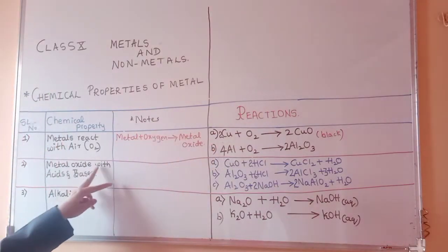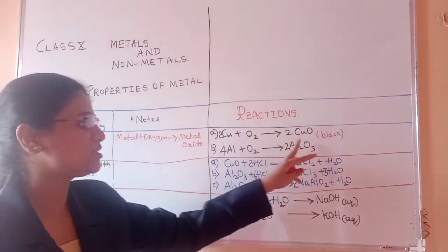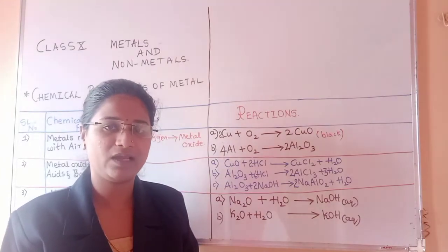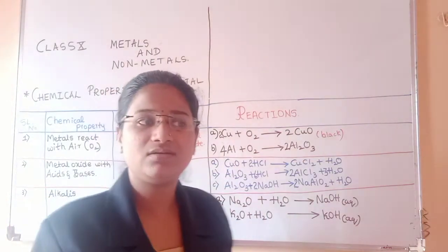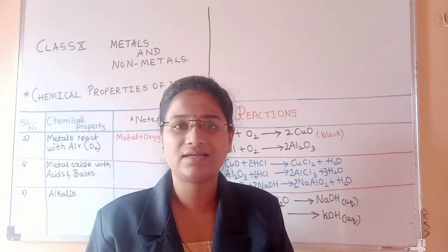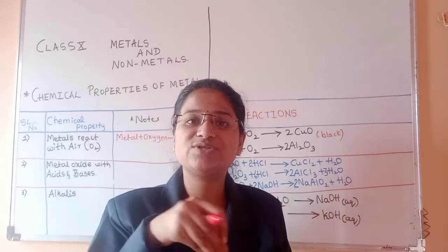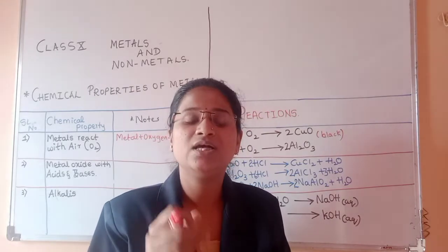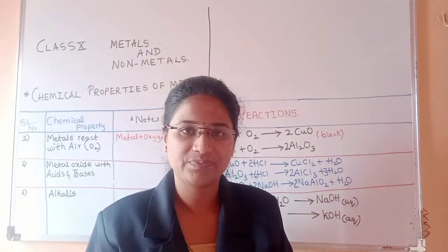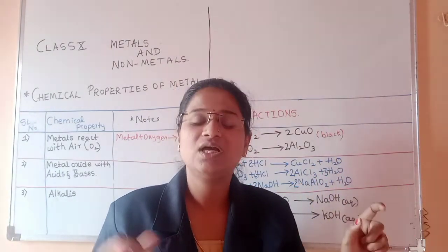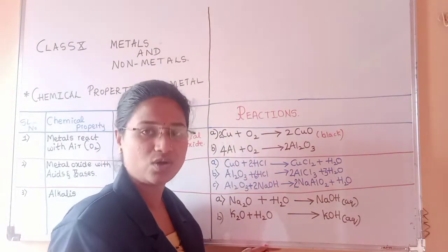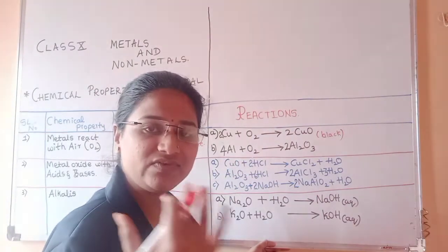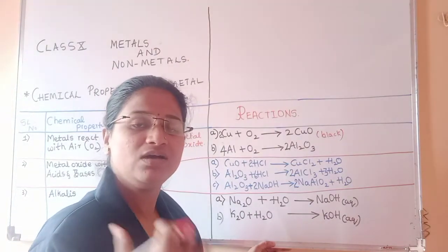Next, when metal oxides react with acids and bases — we studied this activity in 9th standard — we burn the magnesium ribbon, get the white ash, dissolve it in hot water, and use litmus paper as an acid-base indicator. The red litmus paper turns blue, so we call the oxide a basic oxide. Generally, all metal oxides, when they react with acids, are converted into basic oxides.